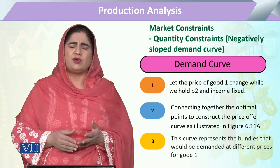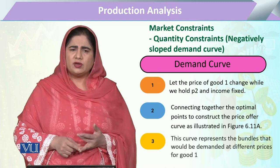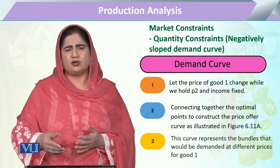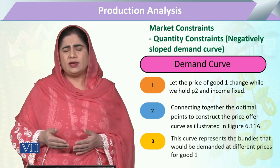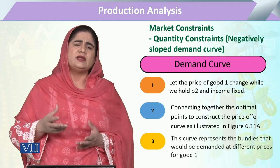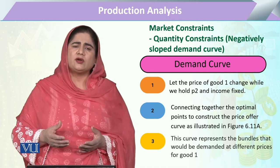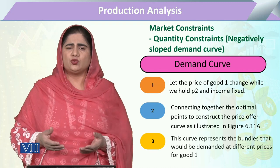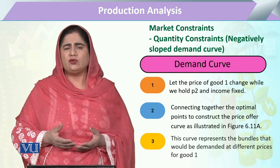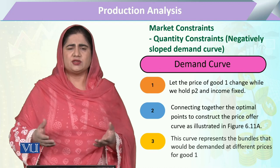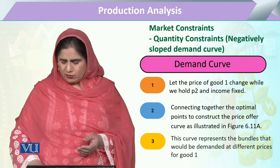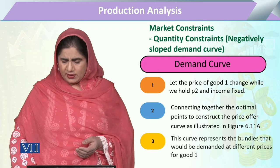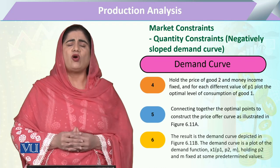We will take one commodity and keep the other commodity constant. Another condition for this analysis is that the budget or income of the consumer has to be given a constant value — it should remain the same in ceteris paribus. Keeping these aspects in view, we can calculate the price offer curve.